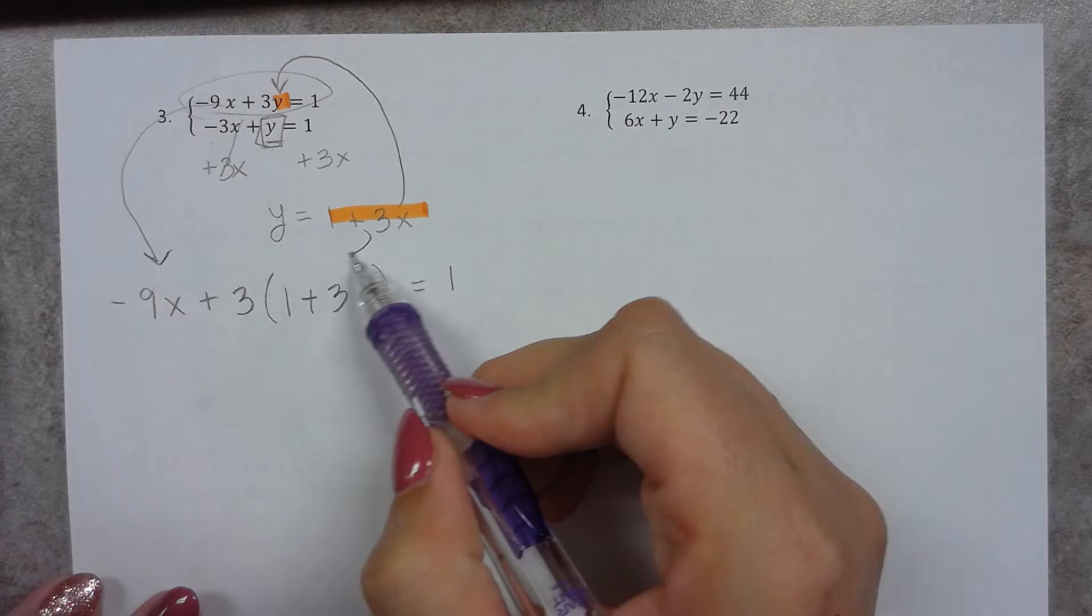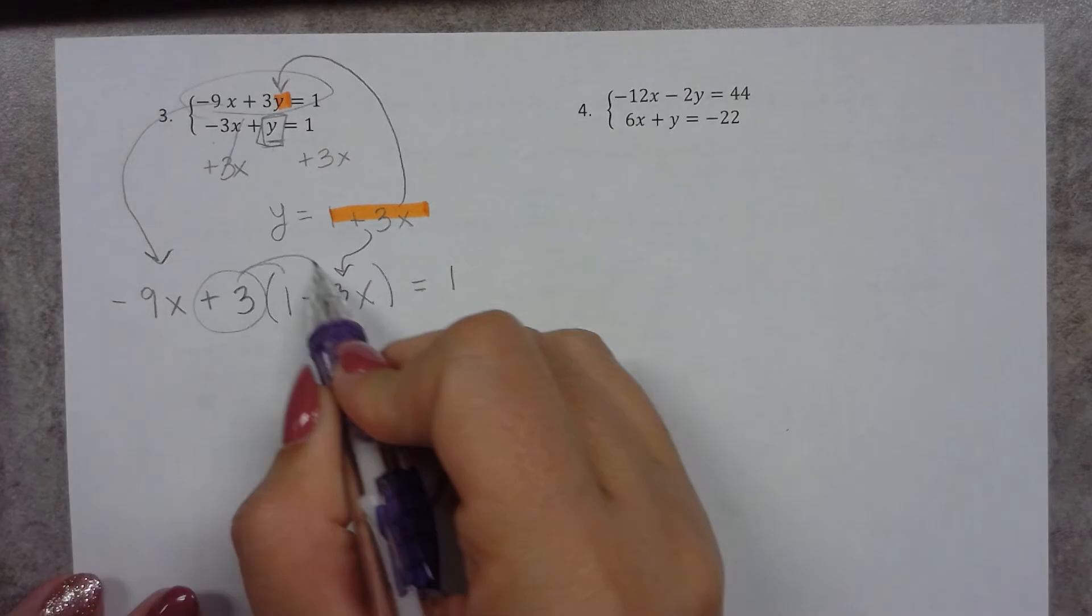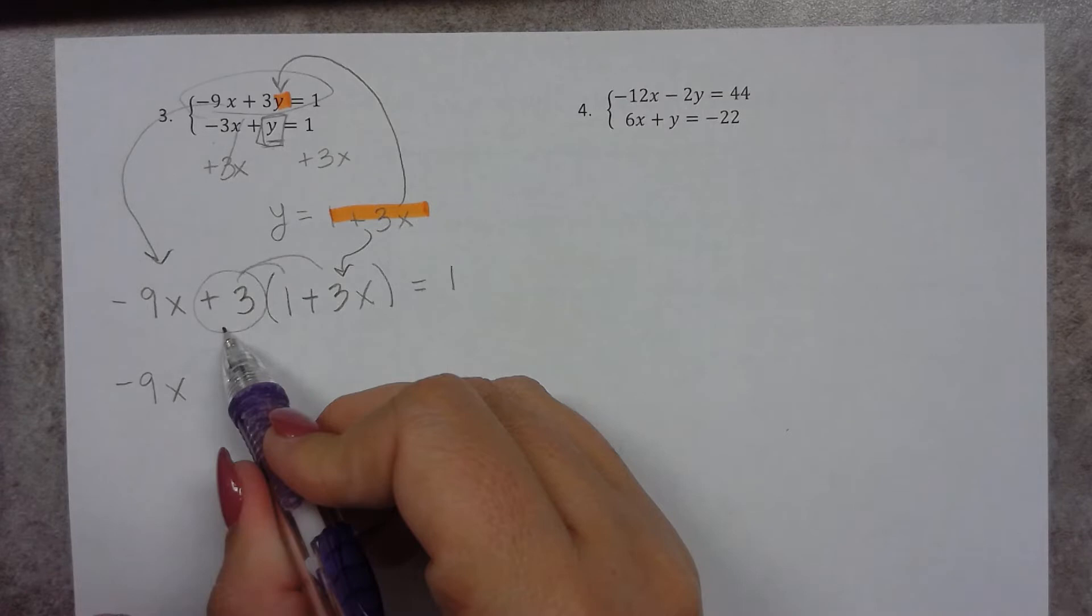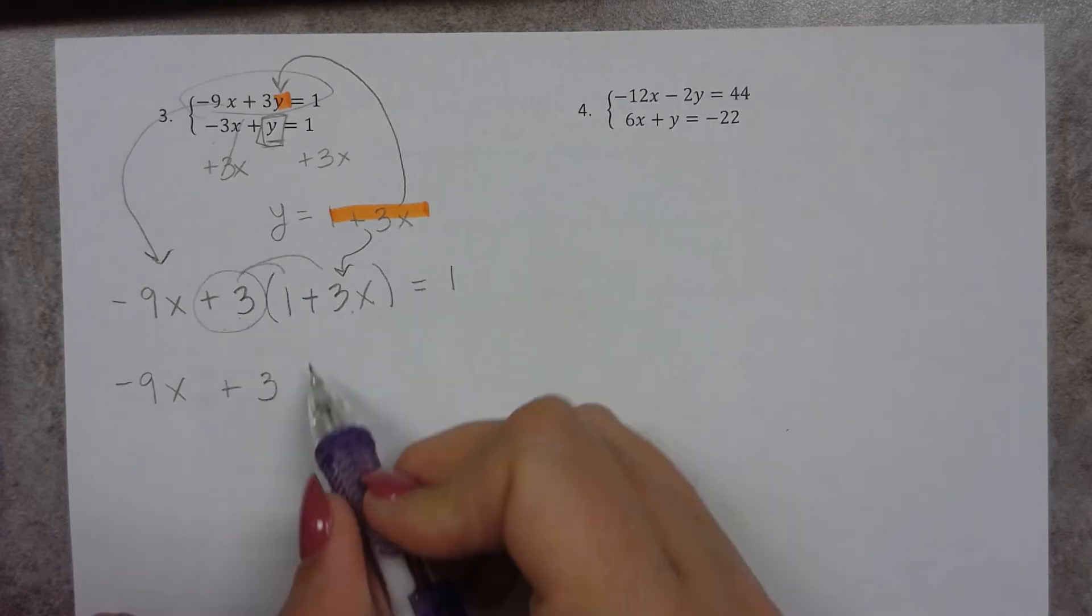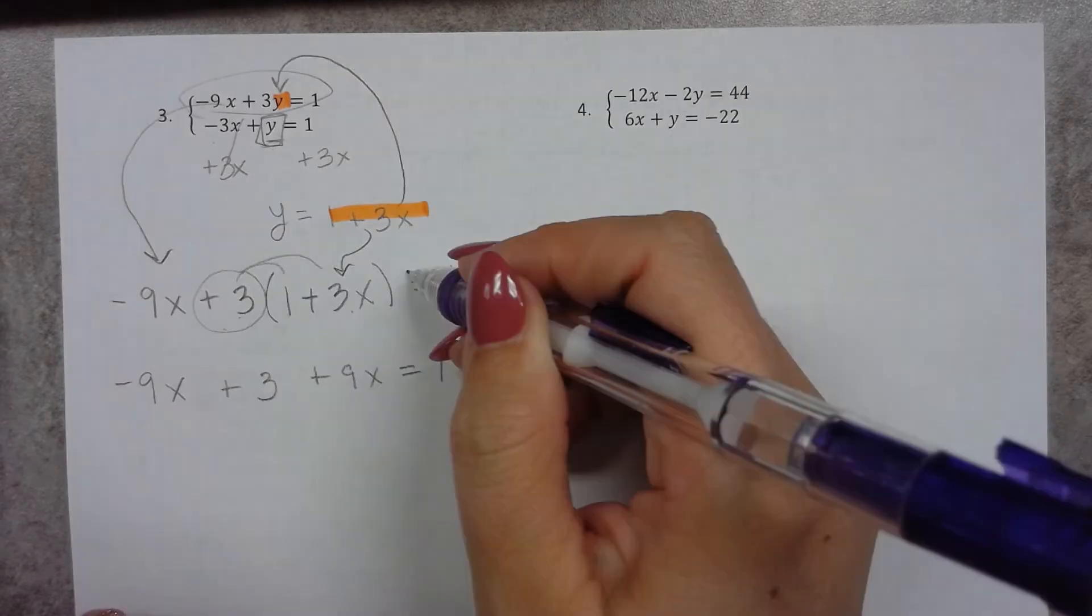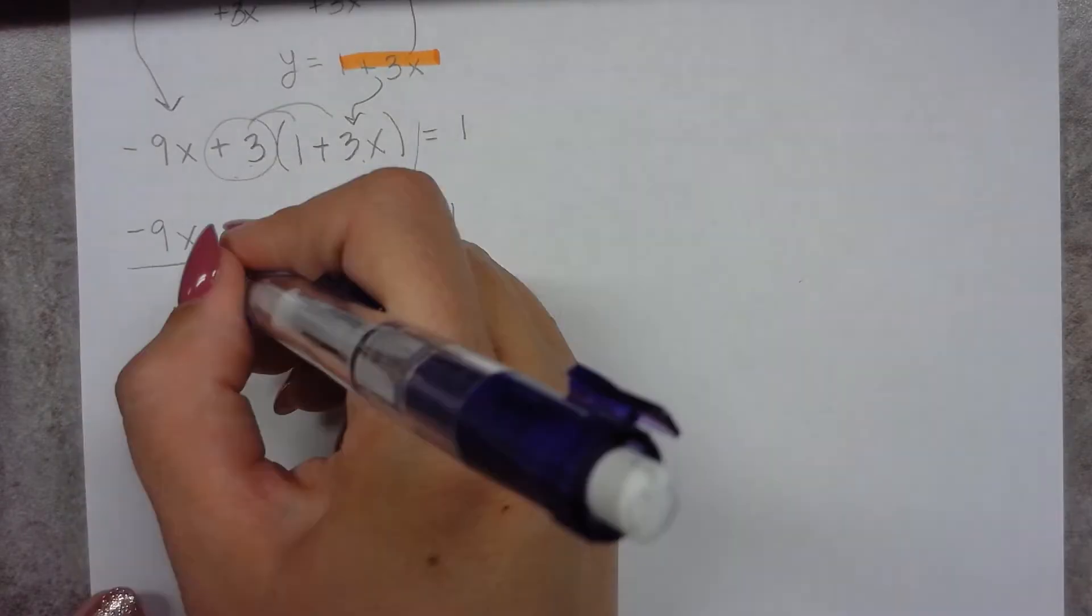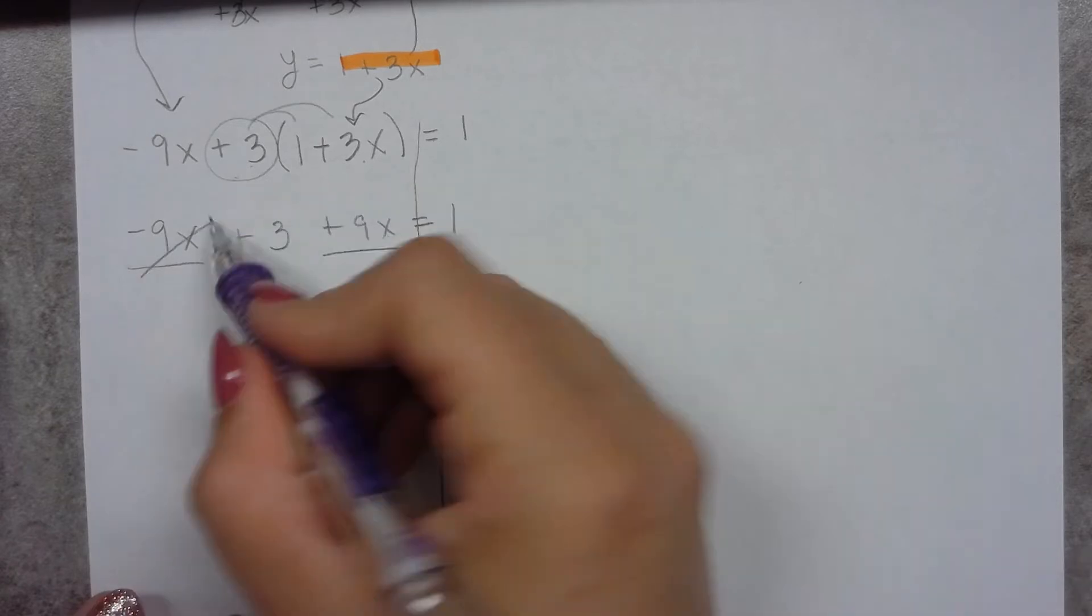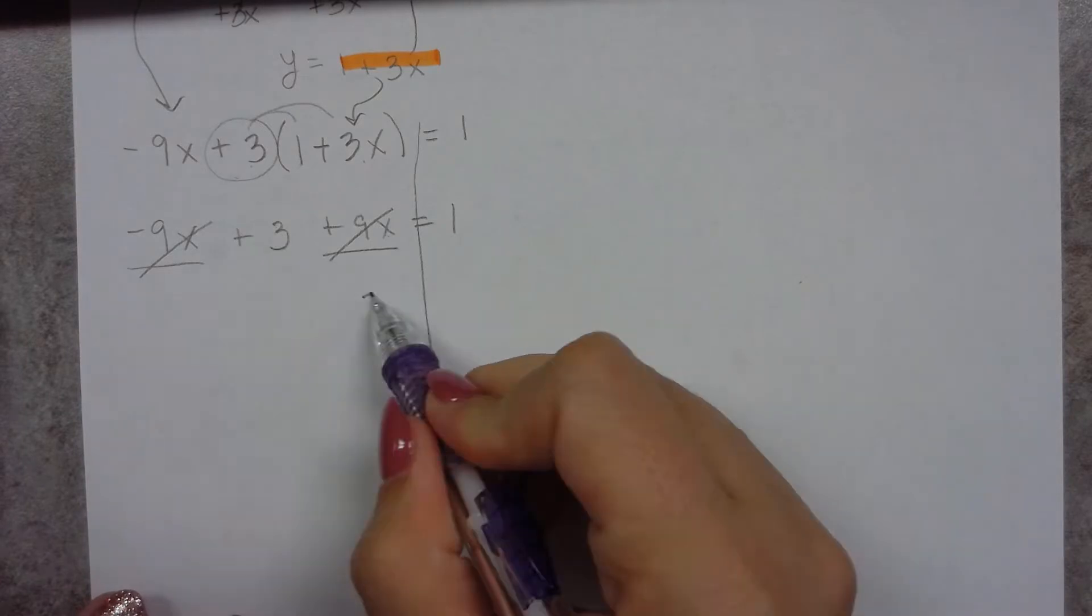Now we know I need to distribute this plus 3 to both of our parentheses. So that gives me negative 9x. Positive 3 times positive 1 is positive 3. Positive 3 times 3x is positive 9x equals 1. Now remember, we're going to combine like terms on either side. So on this left-hand side, I have negative 9x and positive 9x. So when I add those together, they cancel, it gives me 0x. So then all I have left is 3 and all I have left here is 1.